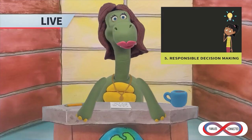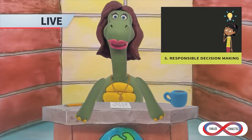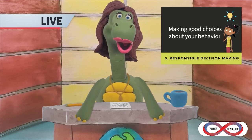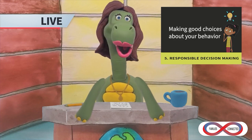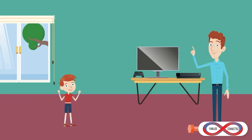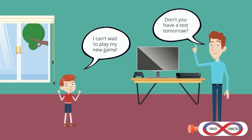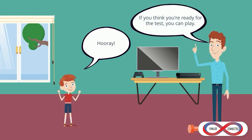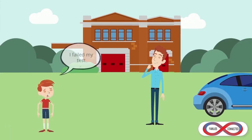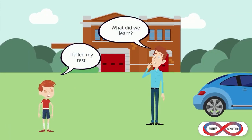Number five: responsible decision making. Responsible decision making is the ability to make good and considerate choices about your own behavior and interactions with others. For many families, this can be a challenge. It can help to take a step back and support your child towards the goal of making responsible choices for themselves. This can mean giving your child space, when safe, to make mistakes and understand consequences.